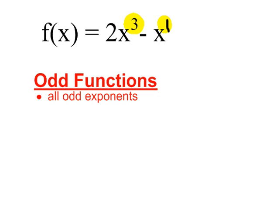Again, don't be confused by the coefficient, the 2 being even. We don't care about the coefficients. All we're looking for are that the exponents are odd, and 3 and 1 are odd.